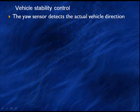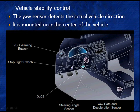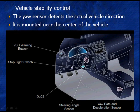The yaw rate sensor detects the actual vehicle direction and is located in the center of the vehicle — in this case, underneath the console. The steering angle sensor is up by the steering wheel. The yaw rate sensor is positioned at the center of gravity for the vehicle.